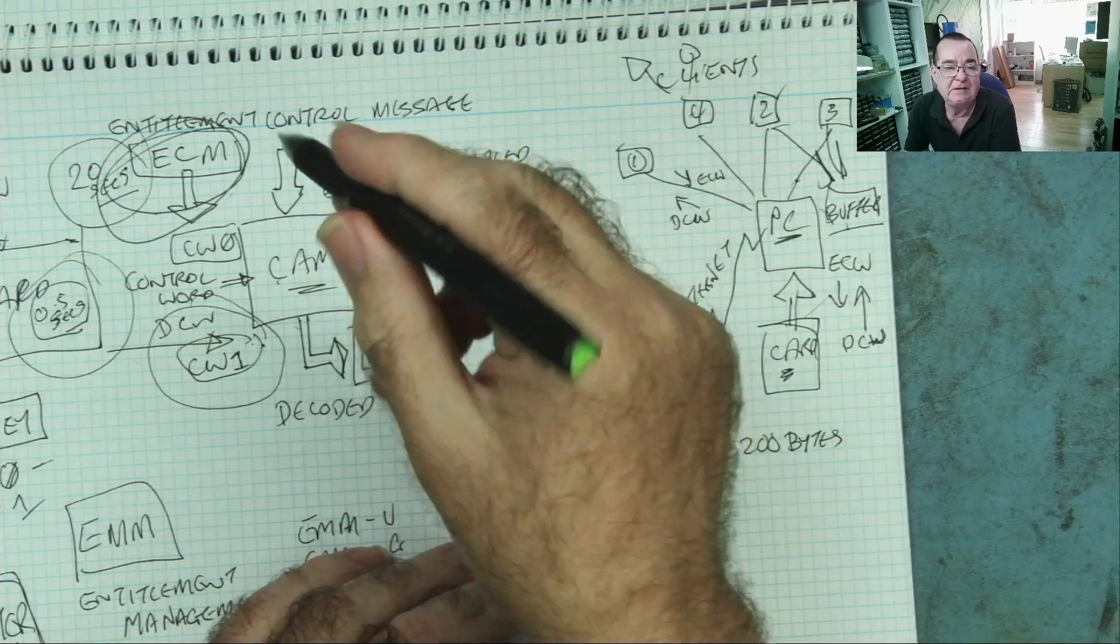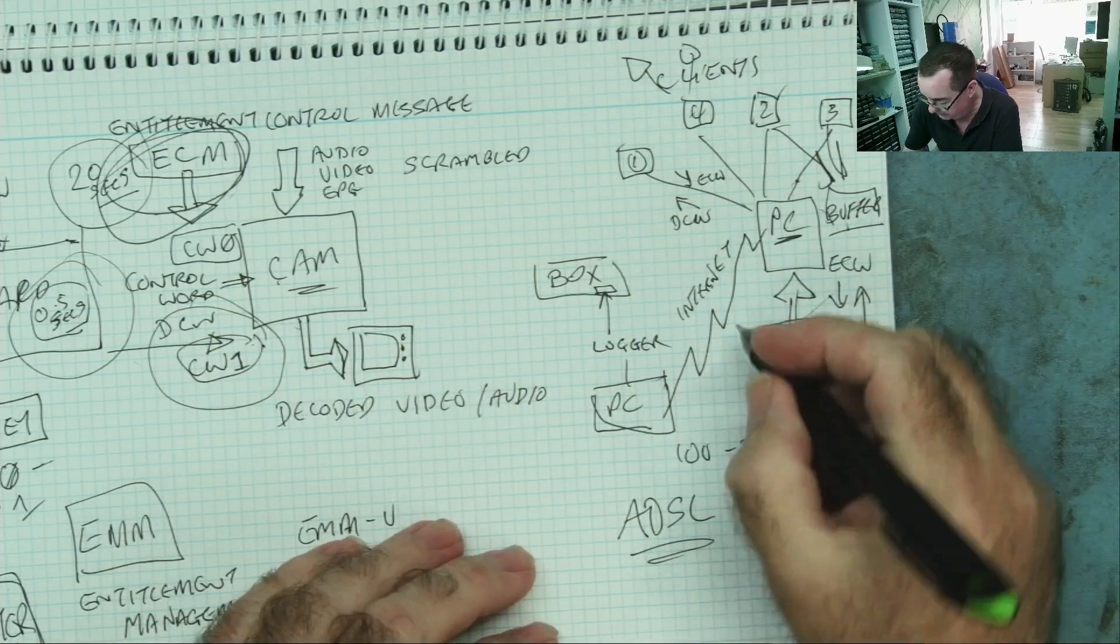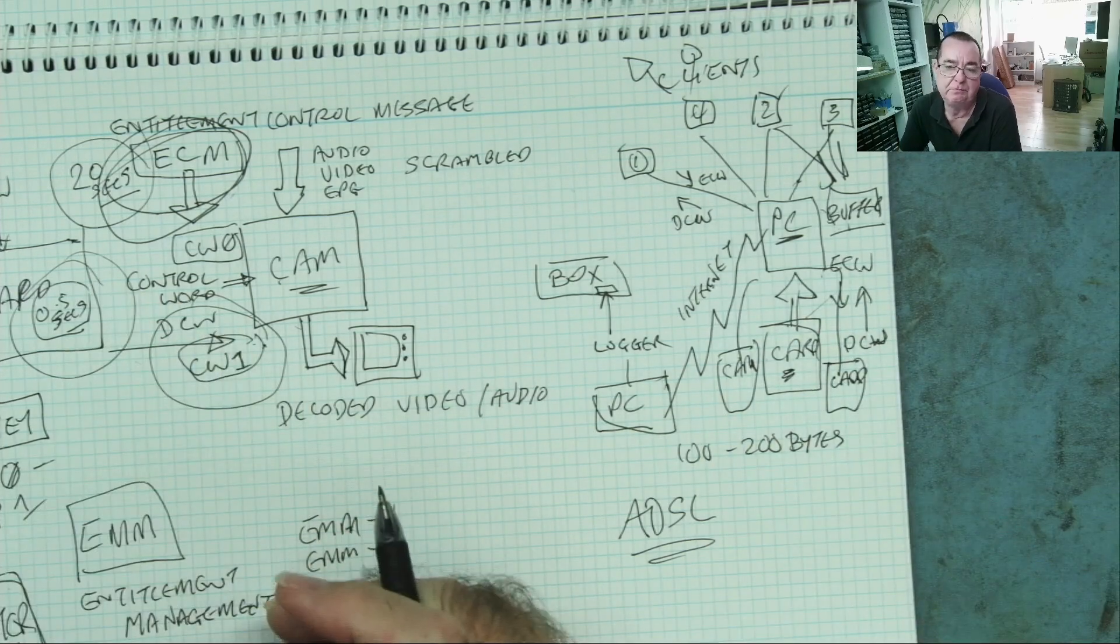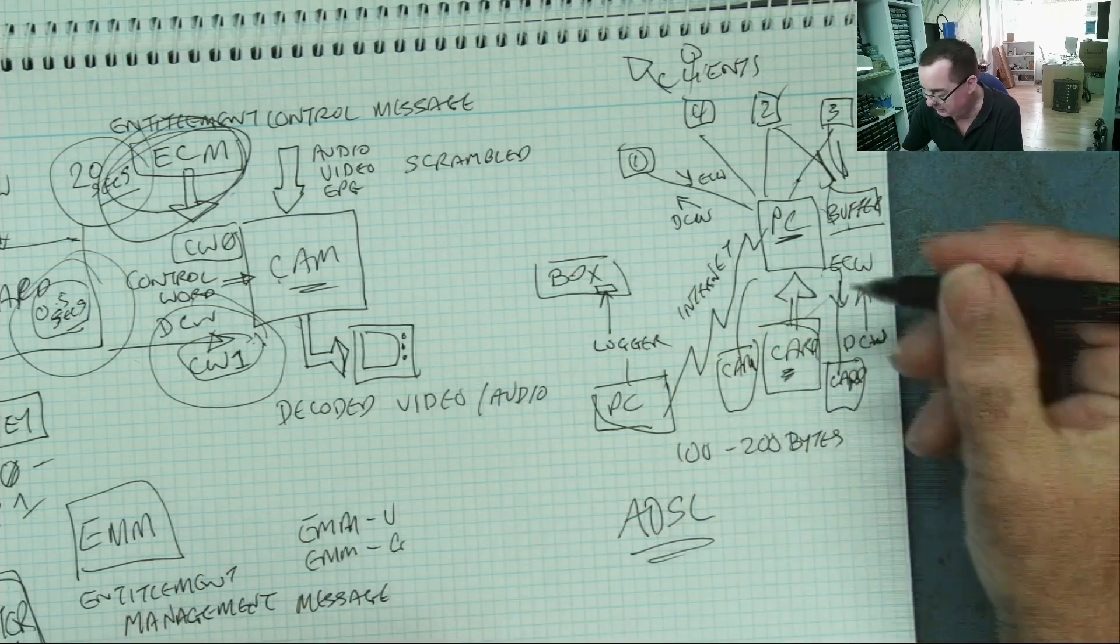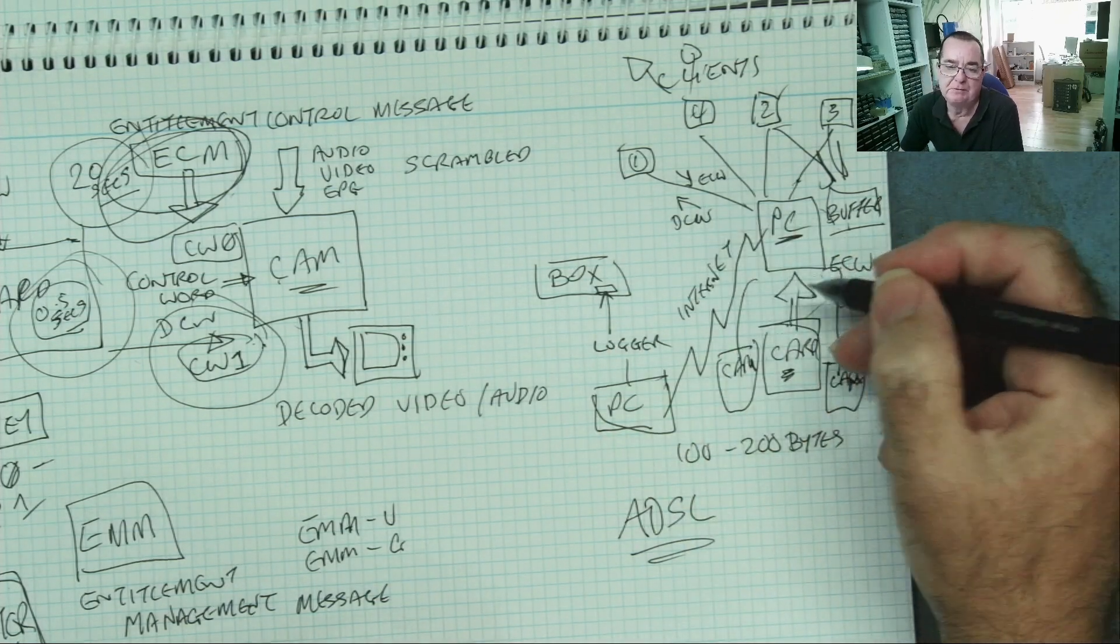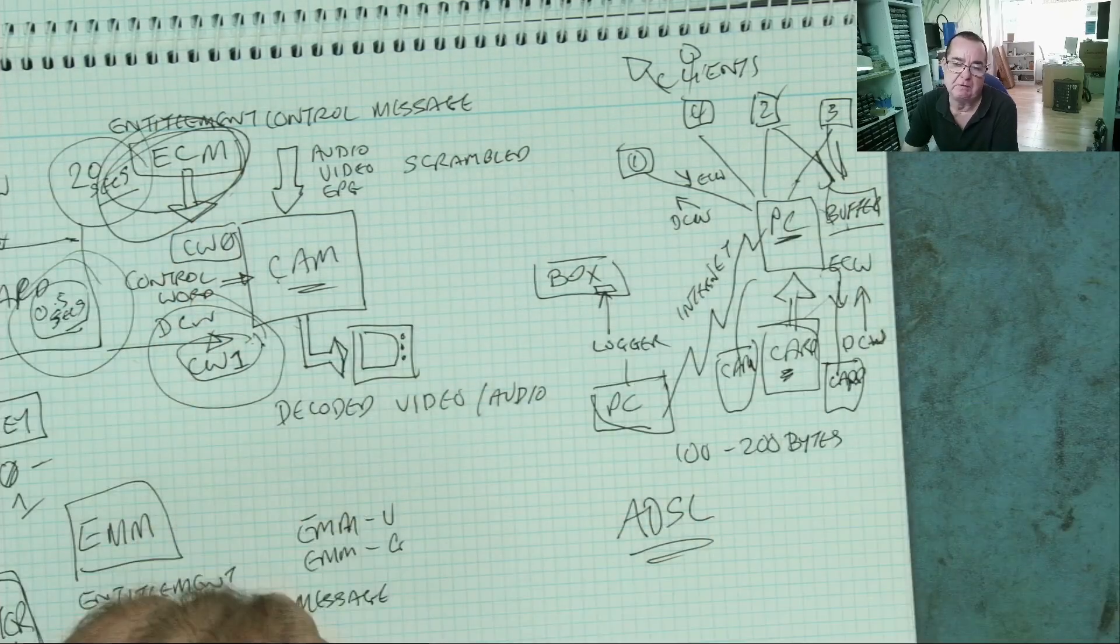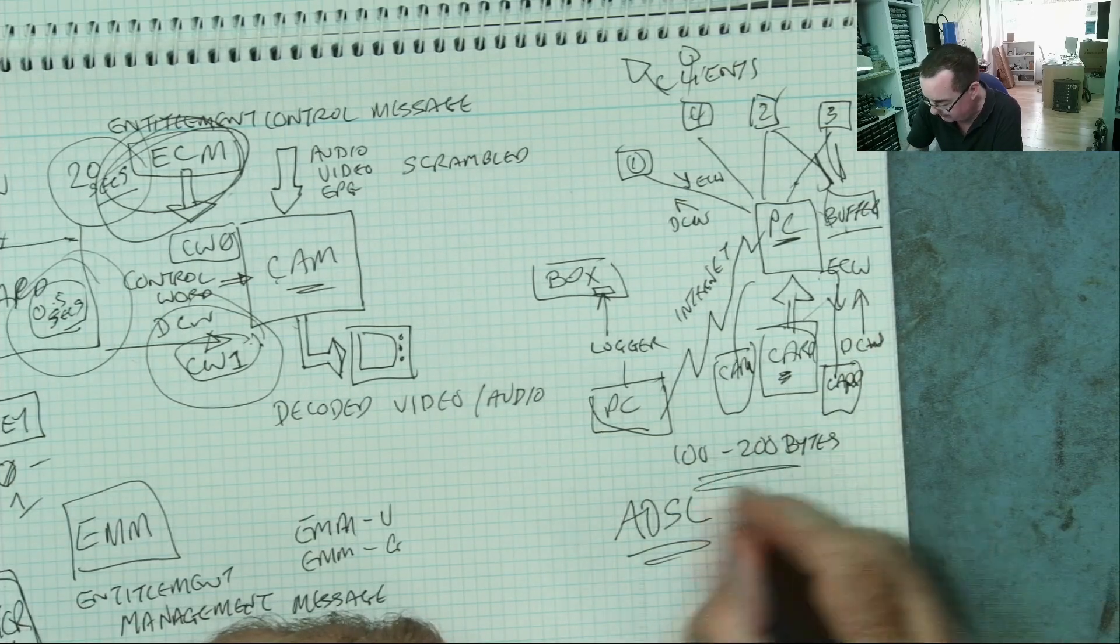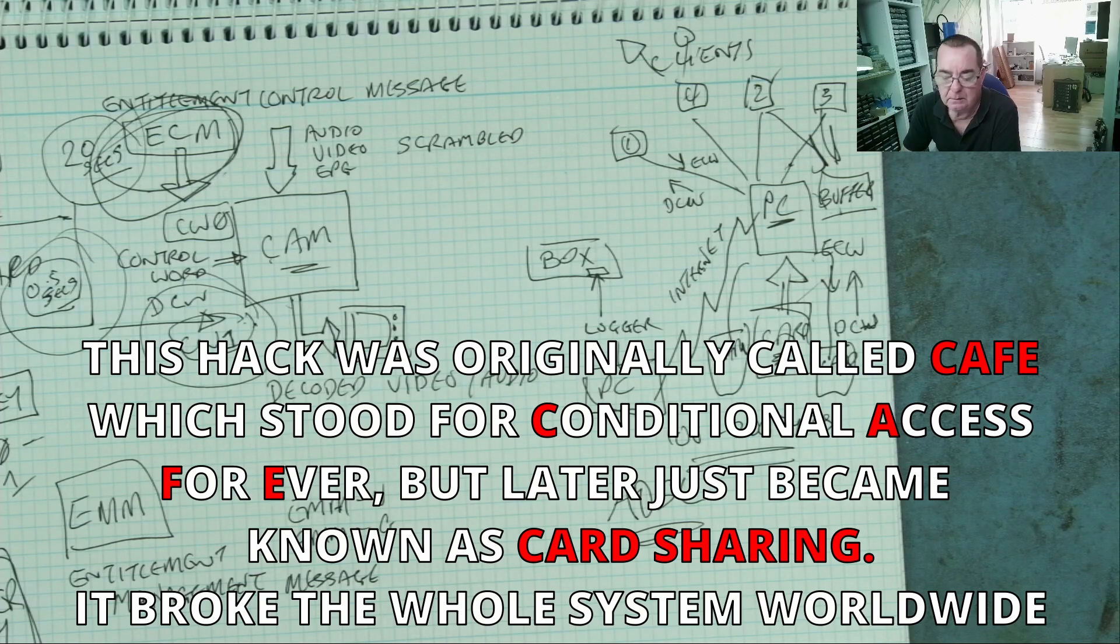But the Achilles heel had a bigger hole in it than that. Mostly, this card isn't doing anything. Only for about half a second or one second out of every 20 seconds is it decrypting the control word. You can have lots more PCs, clients, connecting to the server. When the first client sends the request for a decrypted control word for a given channel, the card is asked to decode it. And when the answer comes back, in this PC is a buffer. This not only sends the decrypted control word back to client number one, it's now in the buffer.